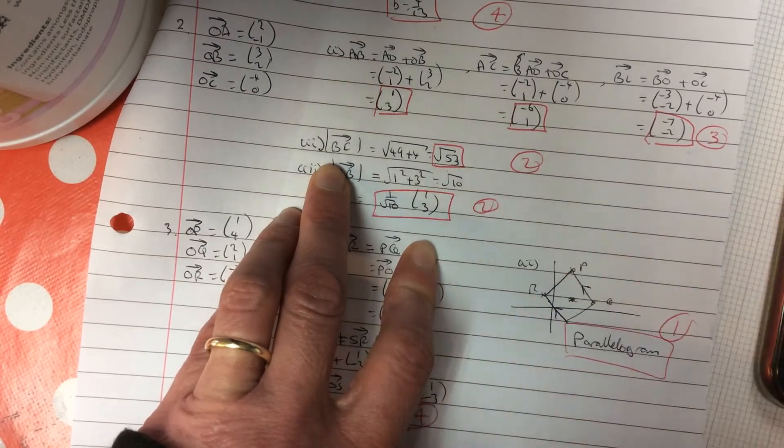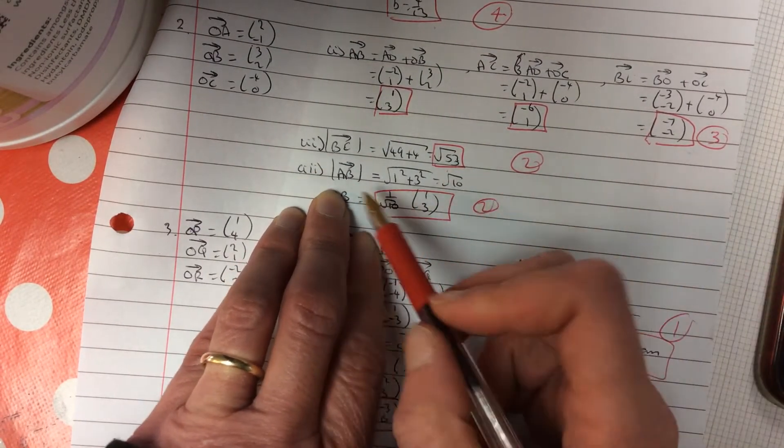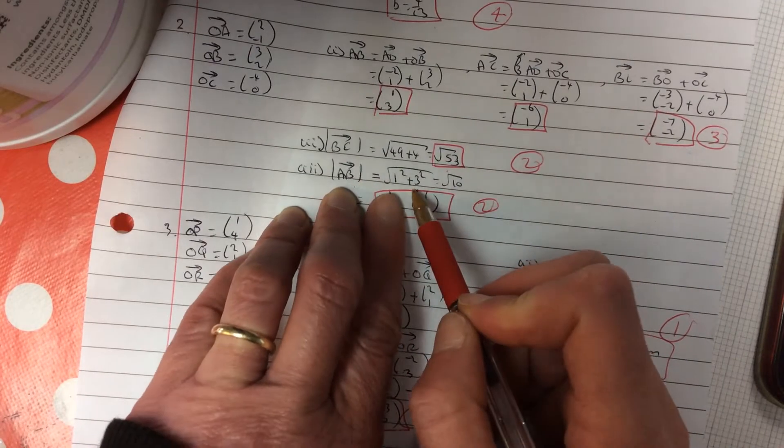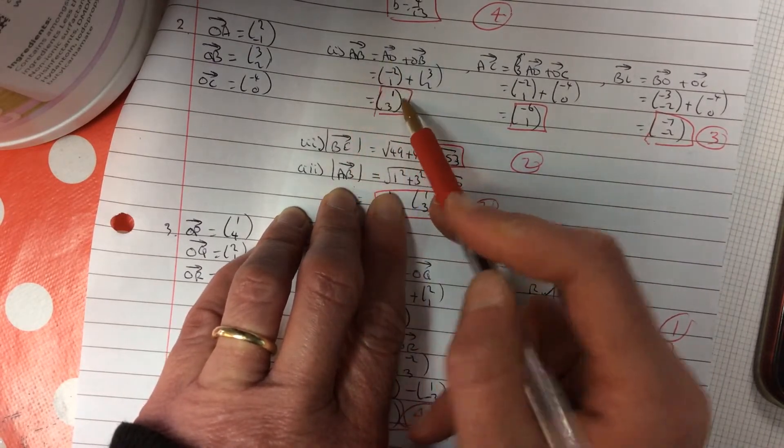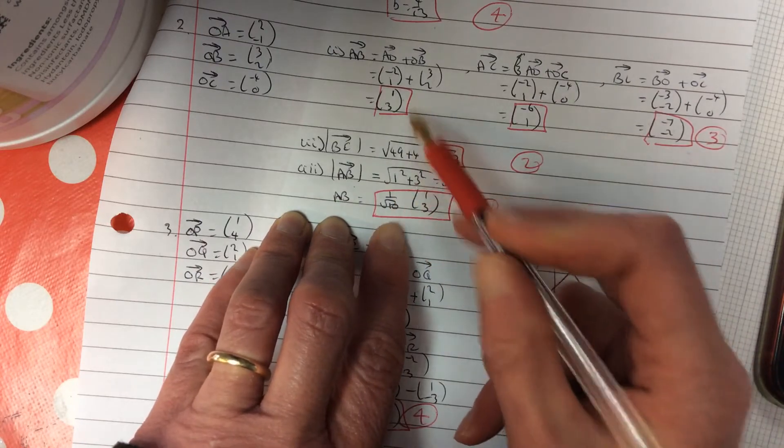So I was just using Pythagoras theorem for the lengths of that. And then a unit vector of AB. See, the length of AB, where's AB? Up here, 1 squared or 3 squared. And the unit vector is 1 over its length times the vector itself.